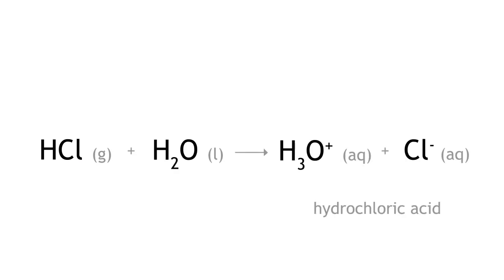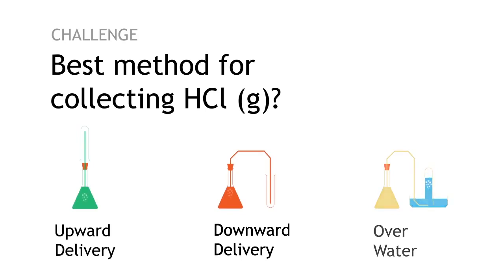Hydrogen chloride dissolves in water to produce hydrochloric acid, so collecting over water is not possible. Since it is more dense than air, it can be collected via downward delivery.